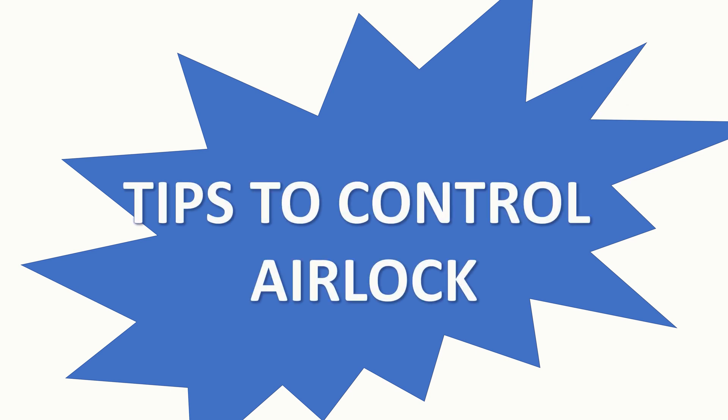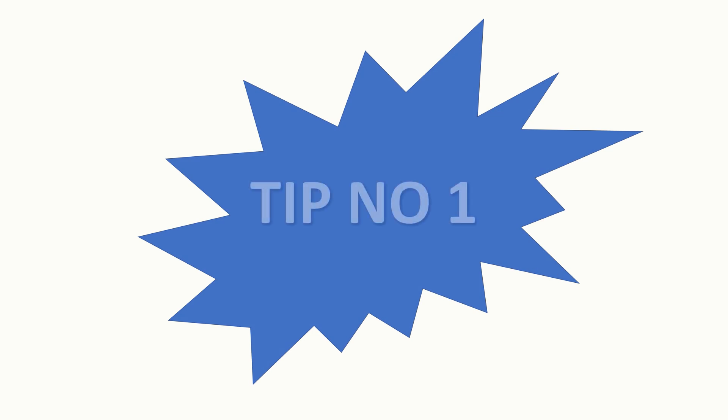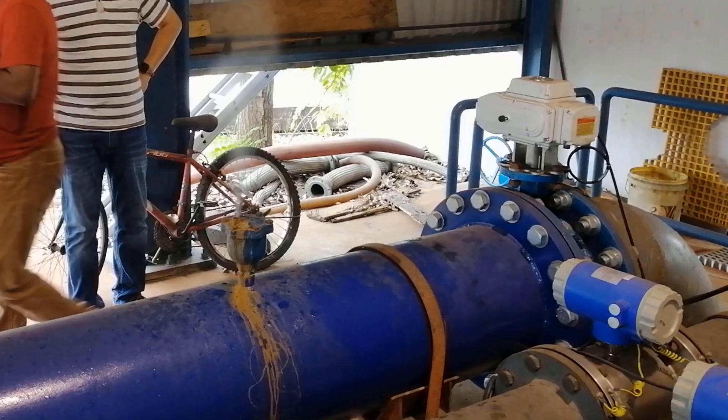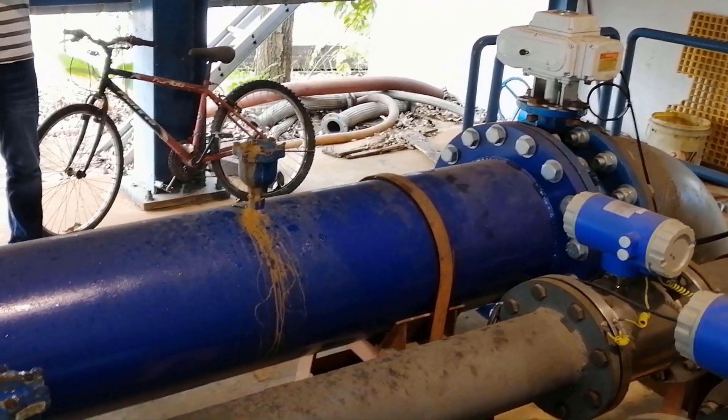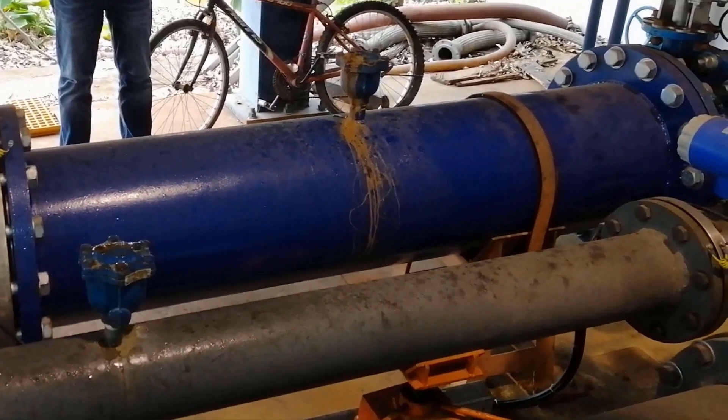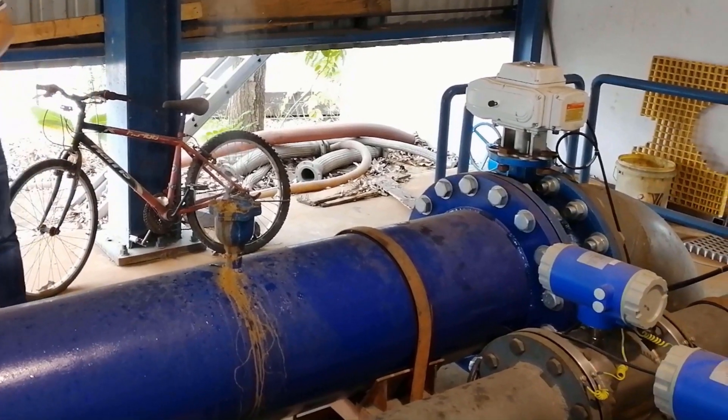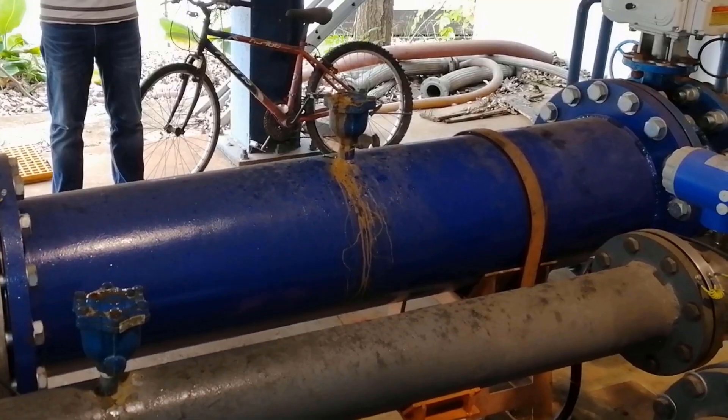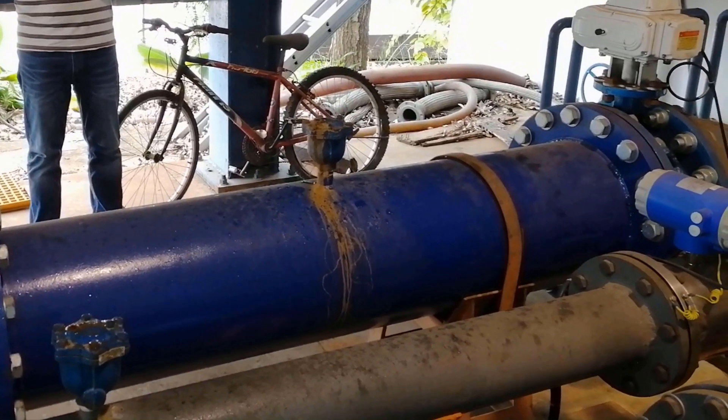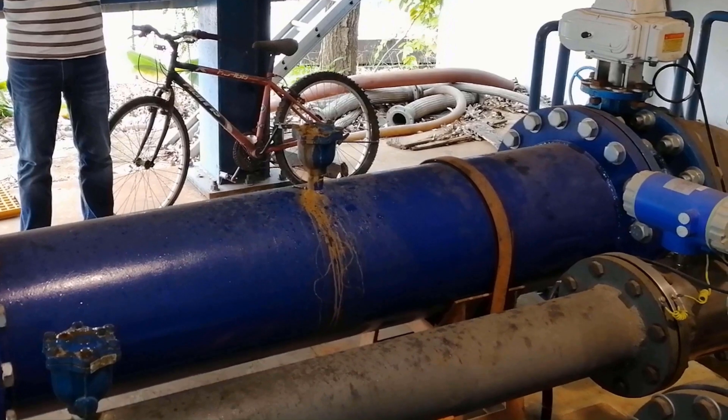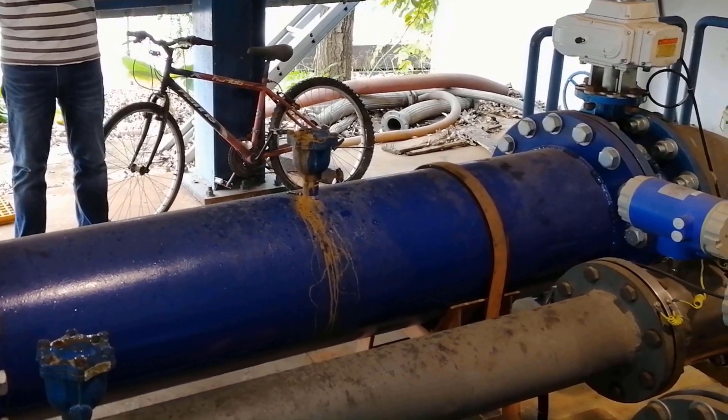Tips to control air lock or air entrainment. Tip number one: Priming. Priming plays a vital role in eliminating the air bubbles, be it self-priming or non-self-priming pump. It is a process of purging the air and therefore ensures that negligible amount of air or vapor is present in the system and thereby avoids air entrainment.